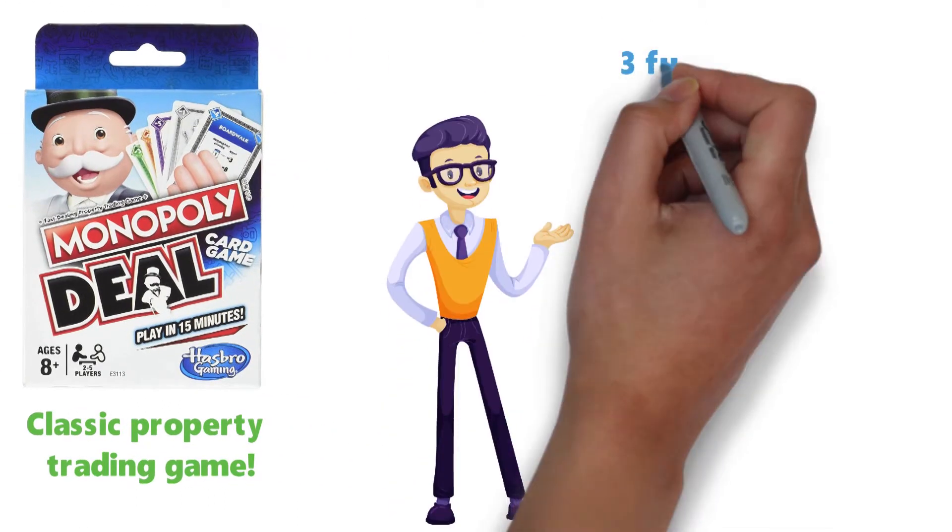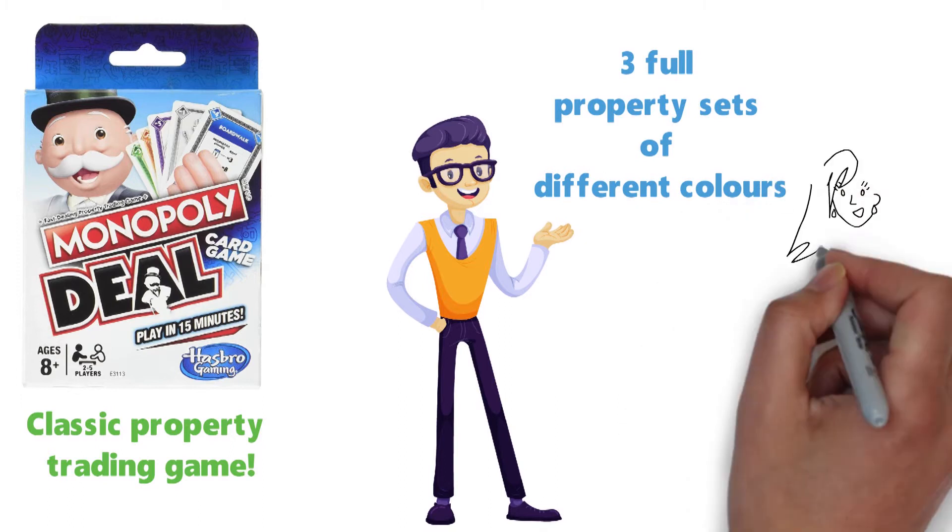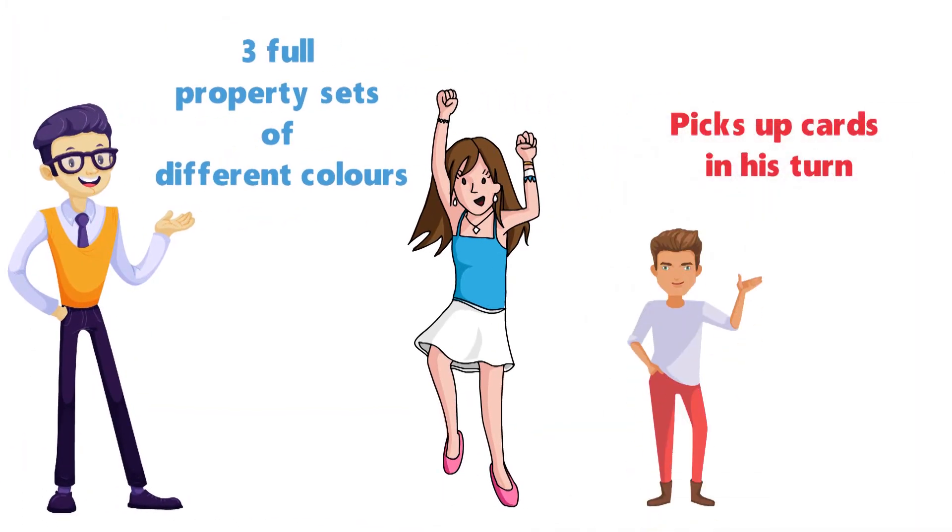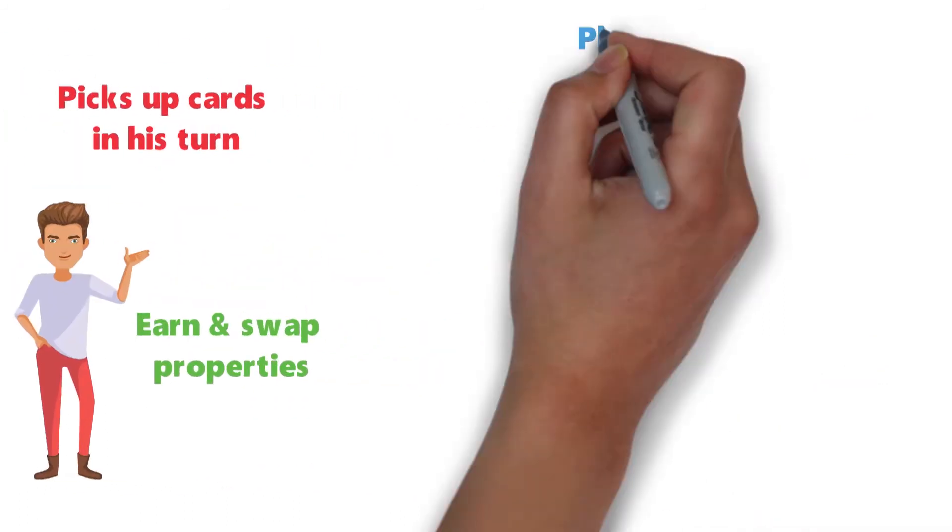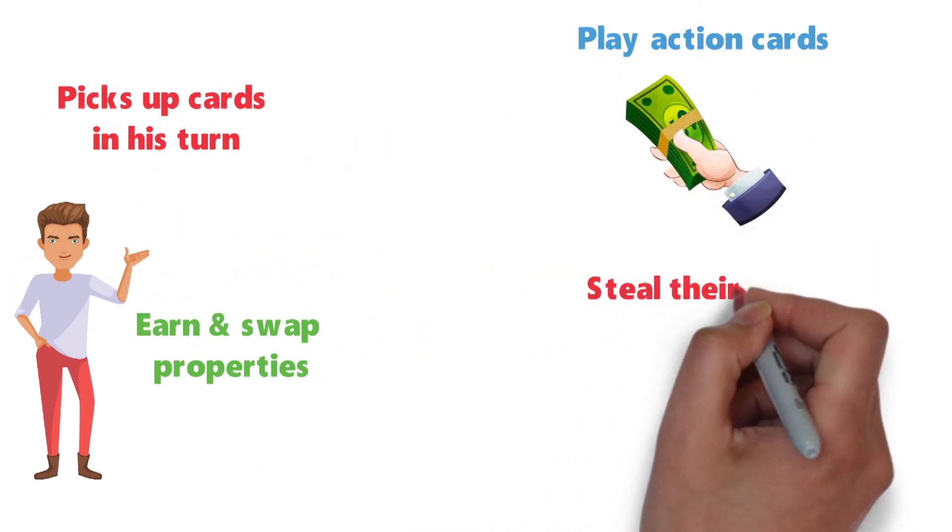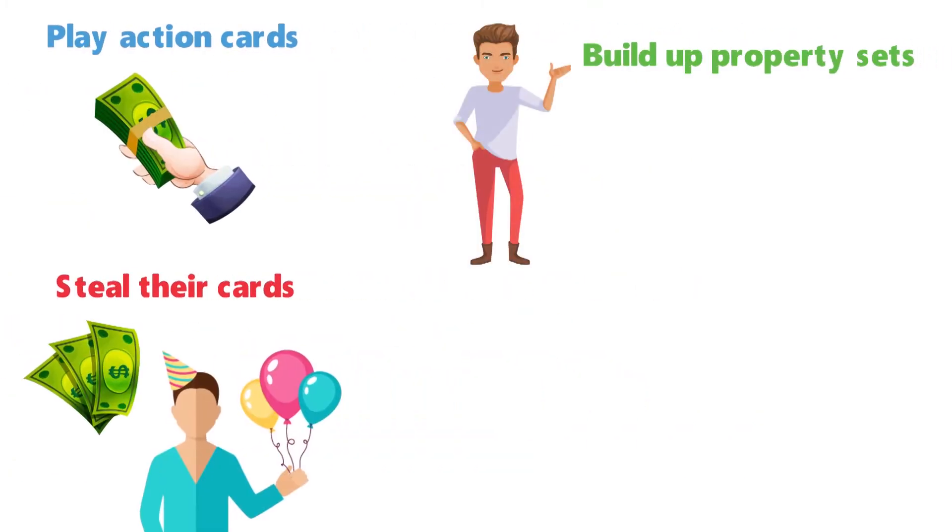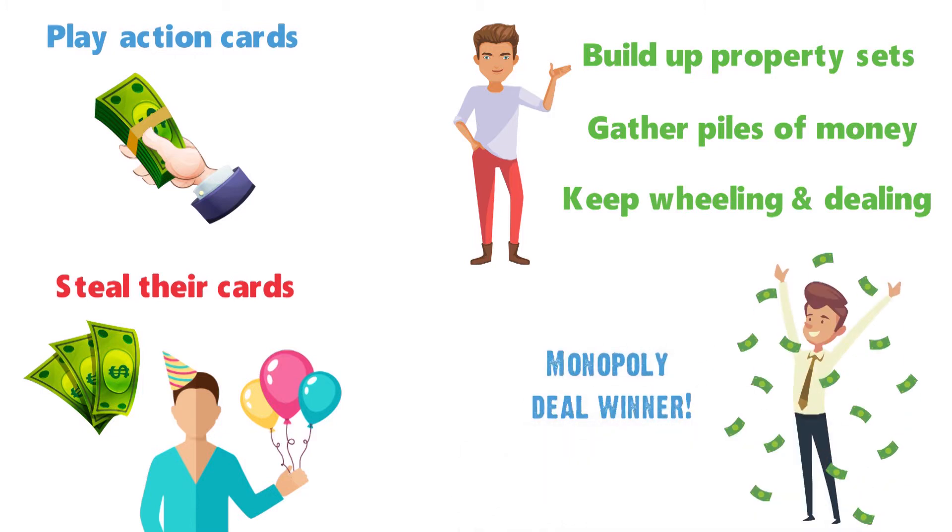The first one who collects three full property sets of different colors wins the Monopoly Deal Card Game. Every player picks up cards in their turn and then works to earn and swap properties. You can play action cards to charge rent to other players or steal their cards and even demand money for your birthday. The goal is to build up property sets, gather piles of money, and keep wheeling and dealing until you become the Monopoly Deal Winner.